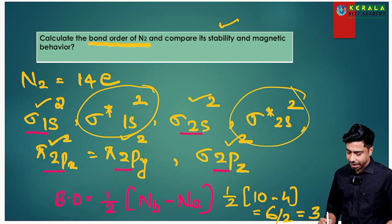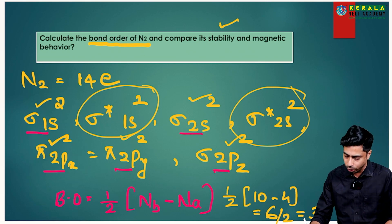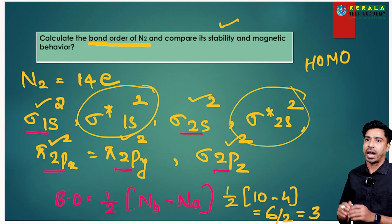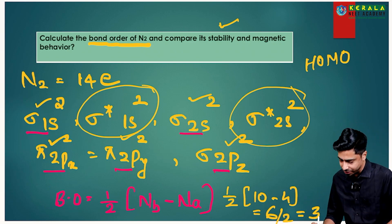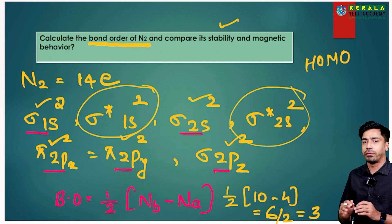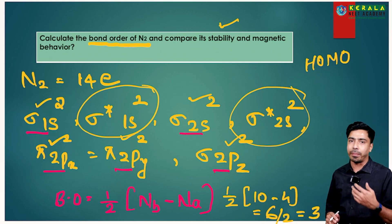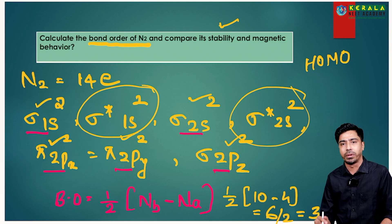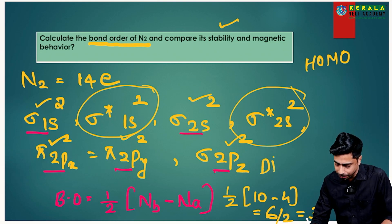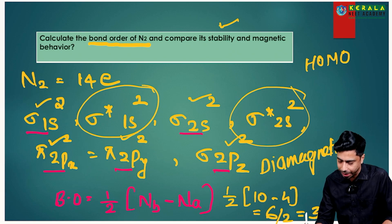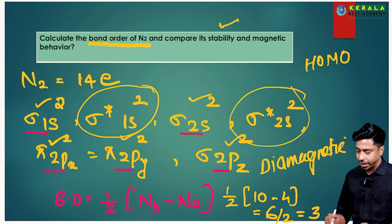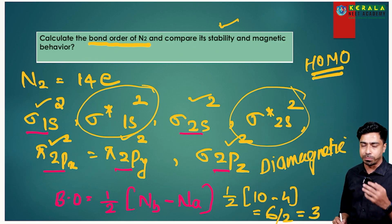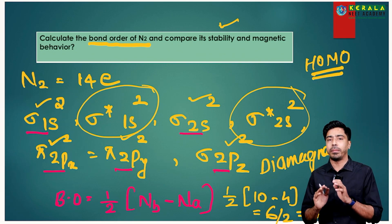For magnetic behavior, we look at the Highest Occupied Molecular Orbital (HOMO) — the last orbital, which is σ2pz. Since σ2pz is paired, N2 is diamagnetic. To summarize: if the HOMO is paired, the molecule is diamagnetic; if unpaired, it is paramagnetic.